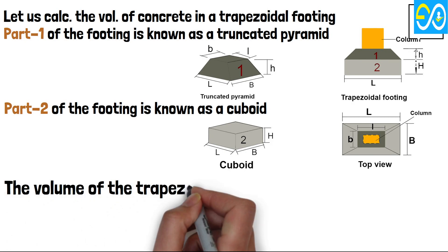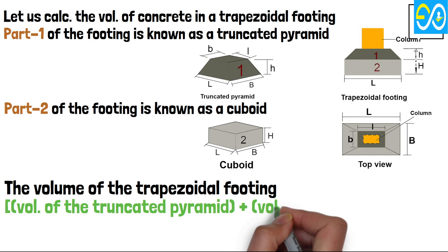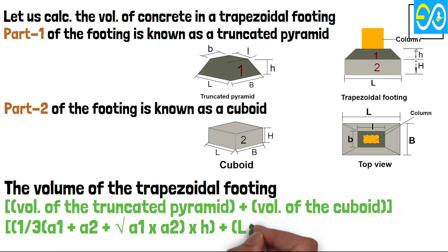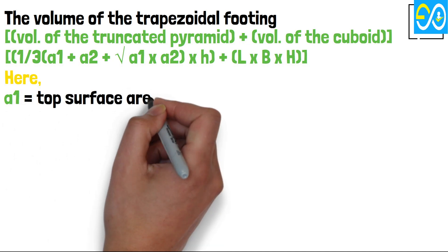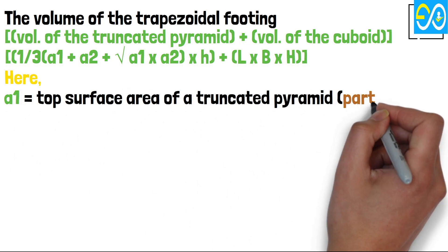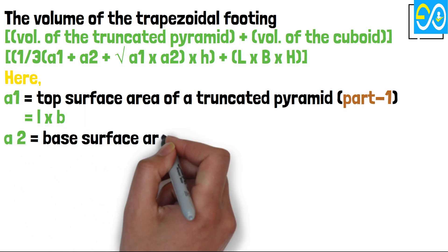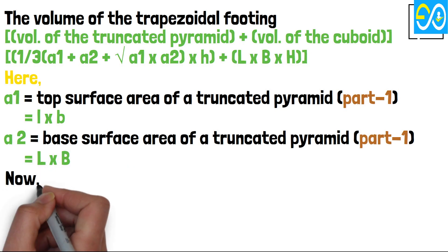The volume of the trapezoidal footing equals volume of the truncated pyramid plus volume of the cuboid. Equals 1/3 times (A1 plus A2 plus square root of A1 times A2) times H plus L times B times H. Here A1 equals top surface area of a truncated pyramid equals l times b. A2 equals base surface area of a truncated pyramid equals L times B.